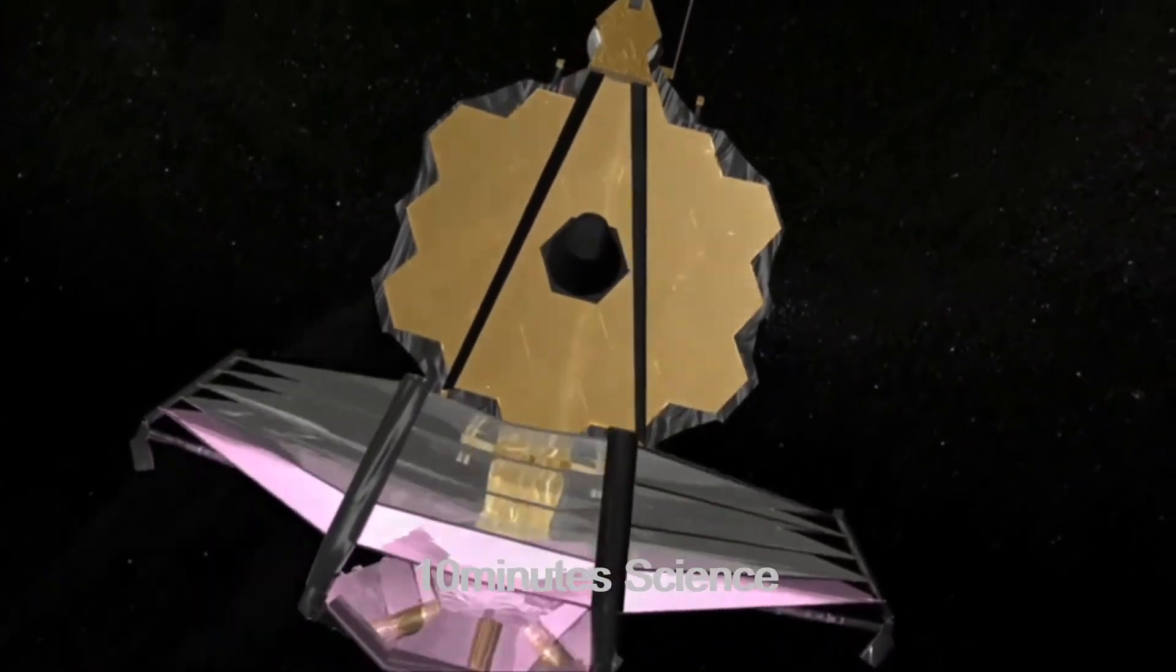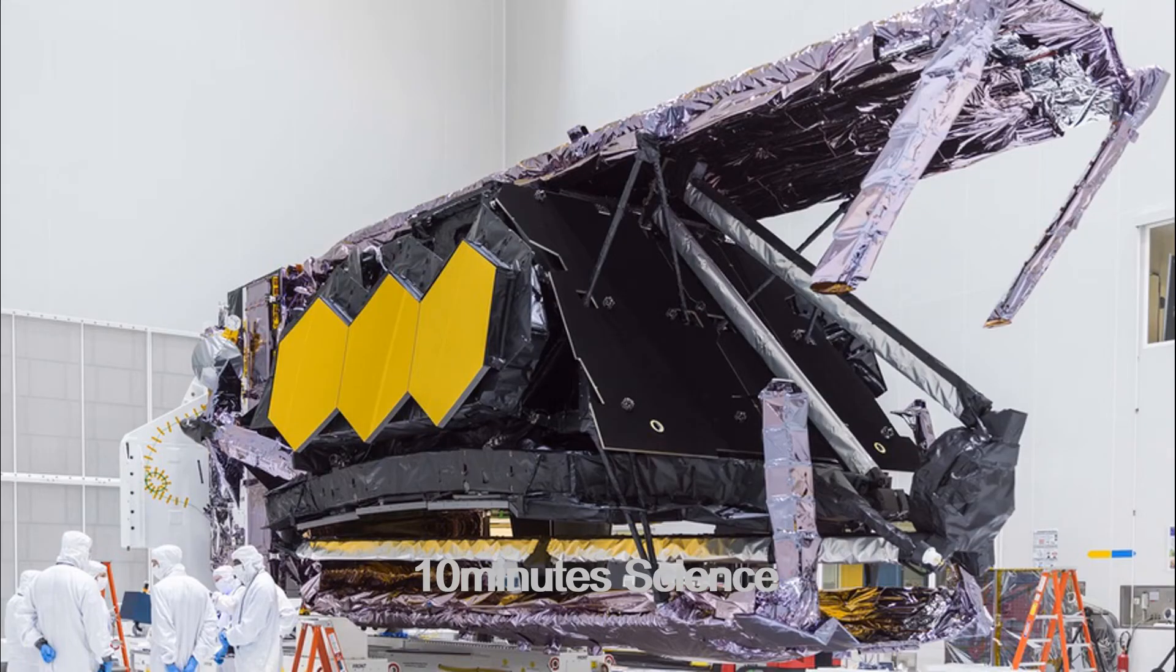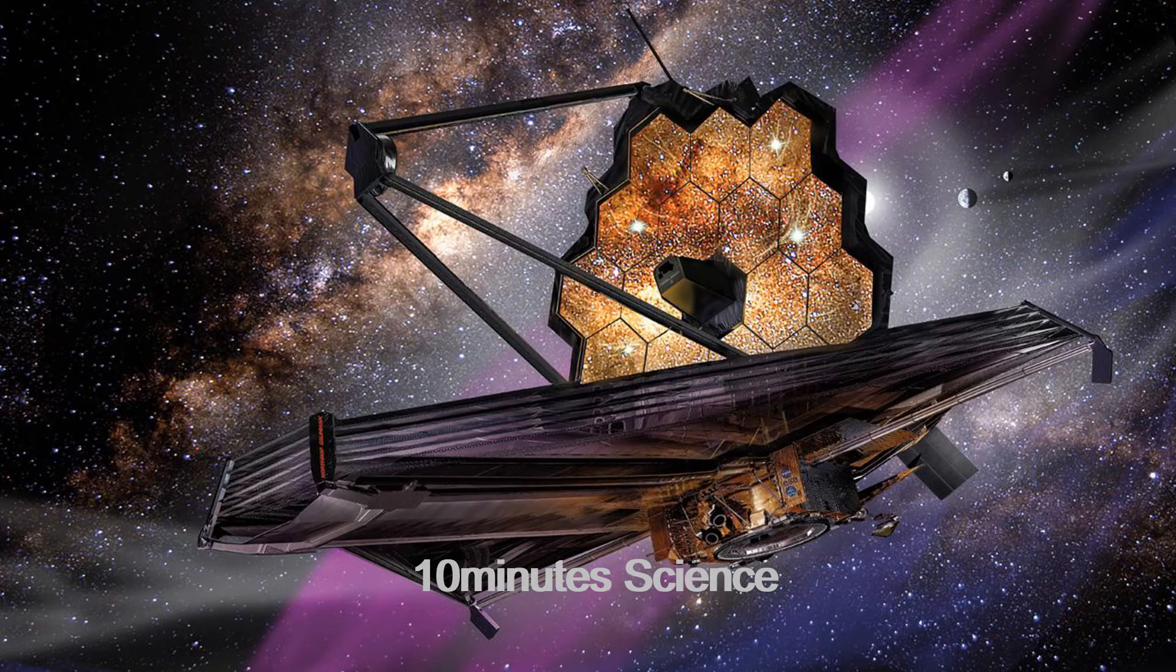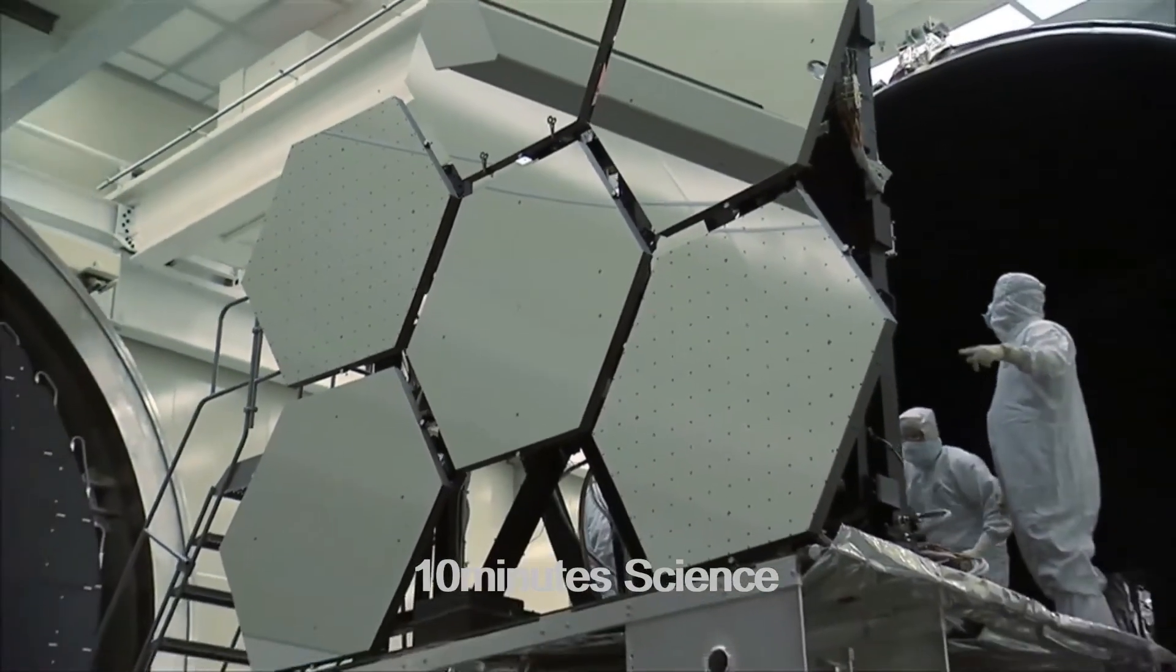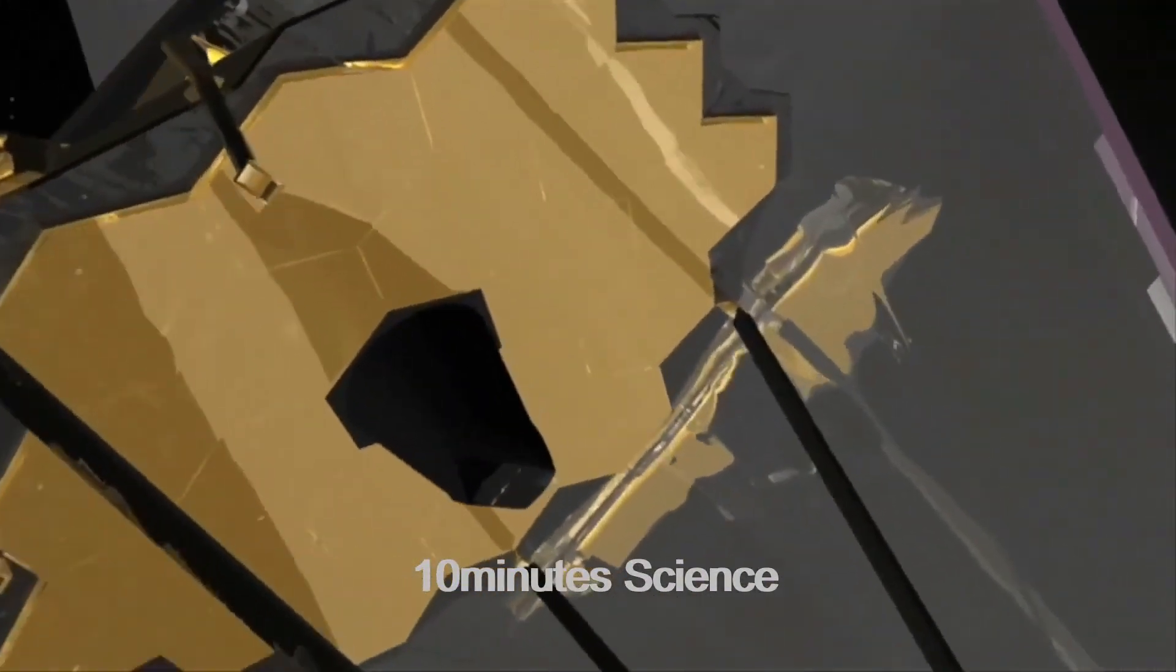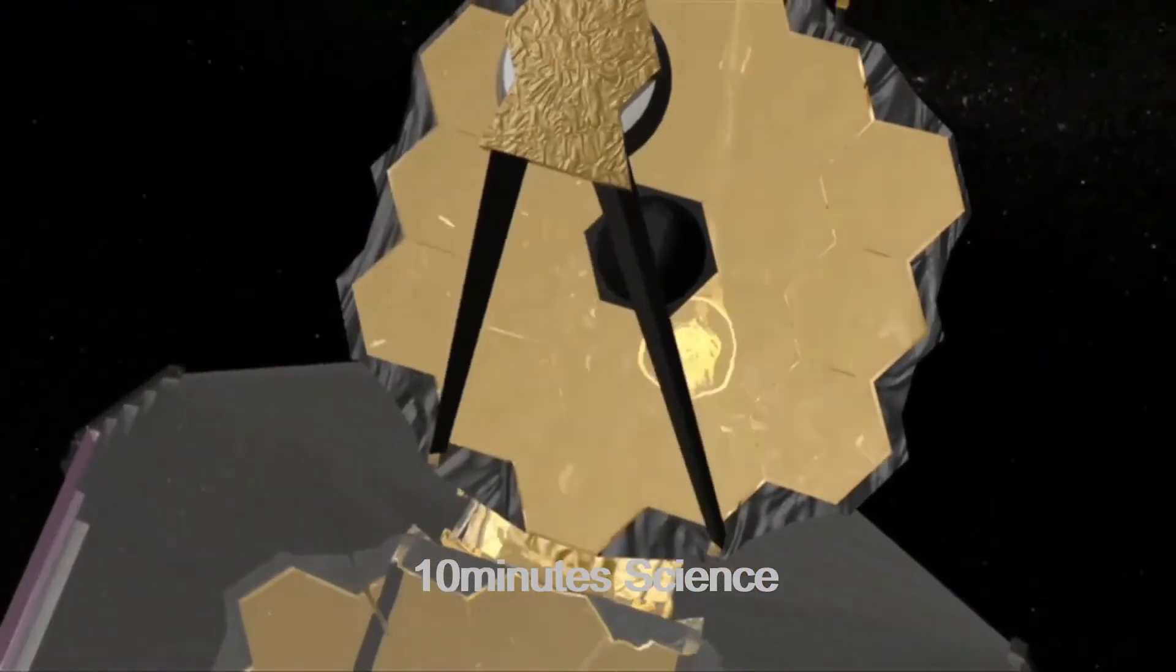Certainly, Webb is easily the most valuable payload ever put on a rocket named Ariane. Fortunately, the rocket has a reputation for being very dependable. The rocket will hold the telescope about 1 million miles from Earth. The James Webb Space Telescope is expected to be no less than revolutionary.